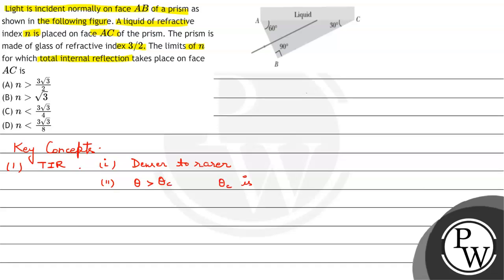Here theta C is critical angle which can be found by the relation sine theta C equals mu 2 upon mu 1.